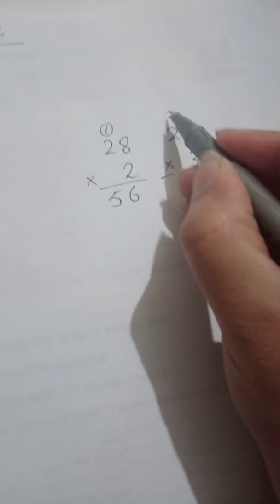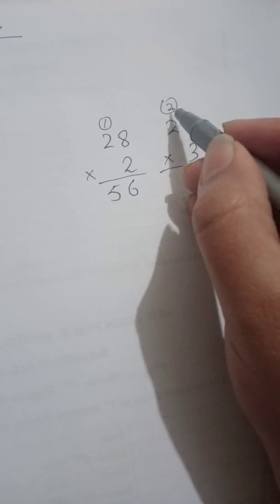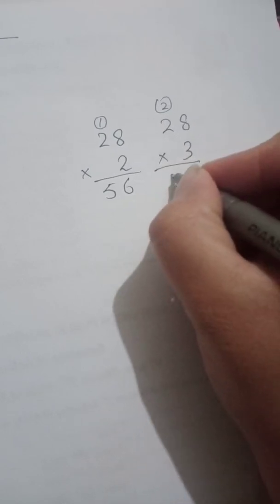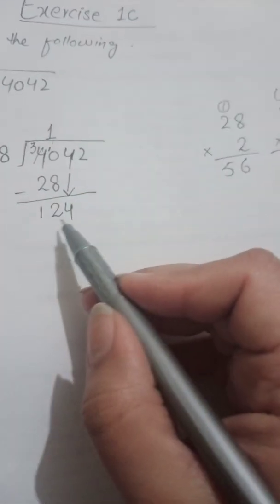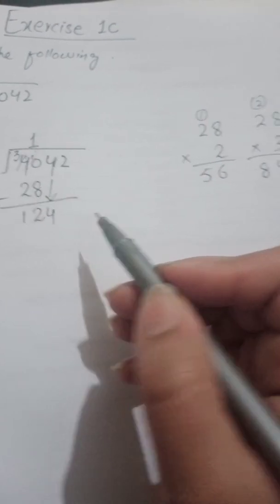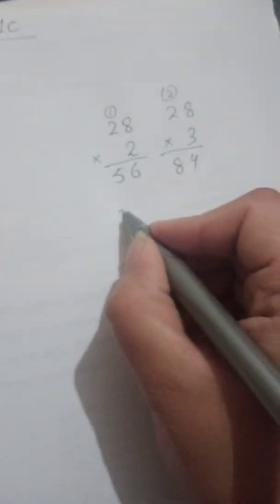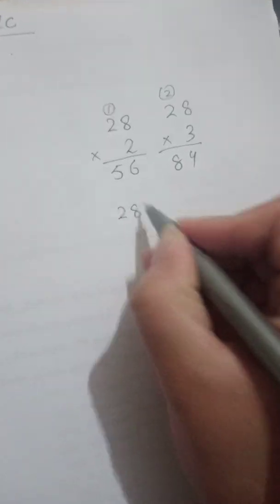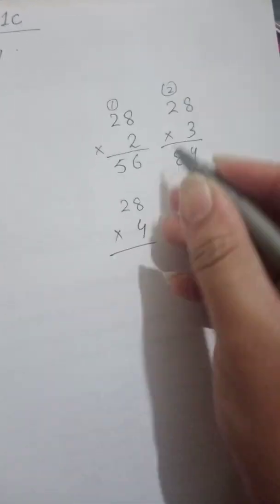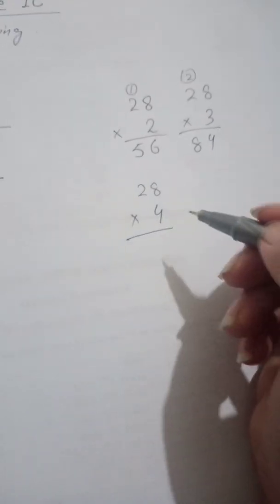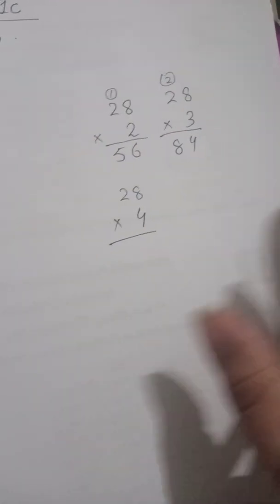For the rough work: 4 times 8 is 32 — 2 carry; then 4 times 2 is 8, plus 2 carry is 10 — giving us 112. So 28 times 4 equals 112. Since 112 is the nearest smaller number to 124, and 28 times 5 would exceed 124, we take 4 times.